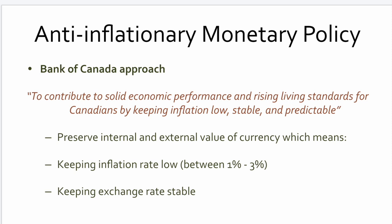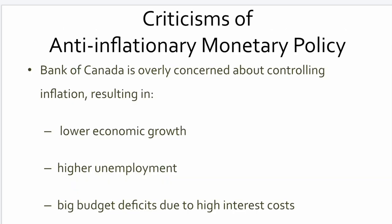A contractionary policy can also be called an anti-inflationary monetary policy. It drives interest rates up to cut inflation, because inflation erodes our spending power. Anti-inflationary monetary policies help preserve the internal and external values of the currency by keeping inflation rates low and keeping exchange rates stable — very important for Canada as a major trading nation. There are criticisms, however: slowing down the economy means lower economic growth, higher unemployment, and big budget deficits, which opposition parties often target the government for.